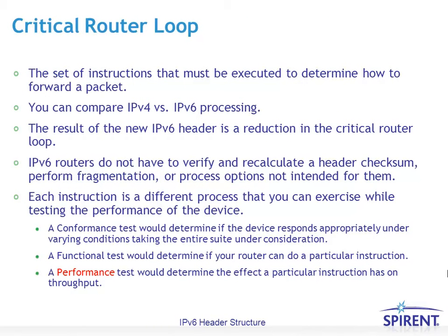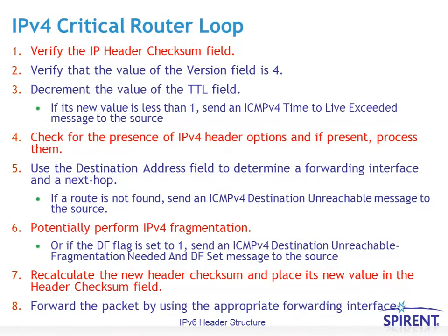When talking about IP headers, we consider it in terms of the critical router loop — a set of instructions that must be executed to determine how to forward a packet. The IPv6 header represents a reduction in the critical router loop, meaning it's easier for routers to process. There are things routers don't have to do with IPv6 that they did with IPv4, such as recalculate a header checksum, perform fragmentation, or process options not intended for them. Looking at the IPv4 critical router loop, the items in red are the negative aspects — the additional processing burden. There are eight steps total, compared to only six steps for processing an IPv6 header.